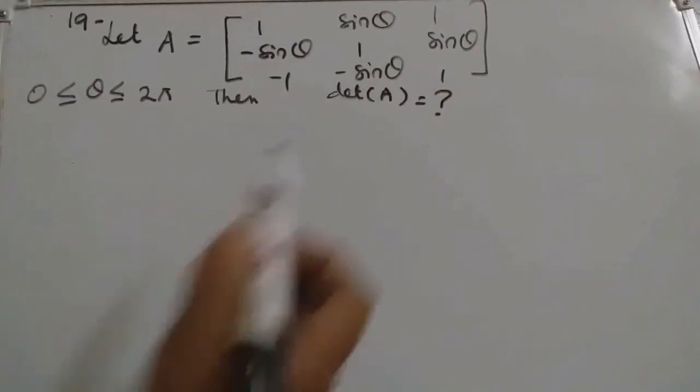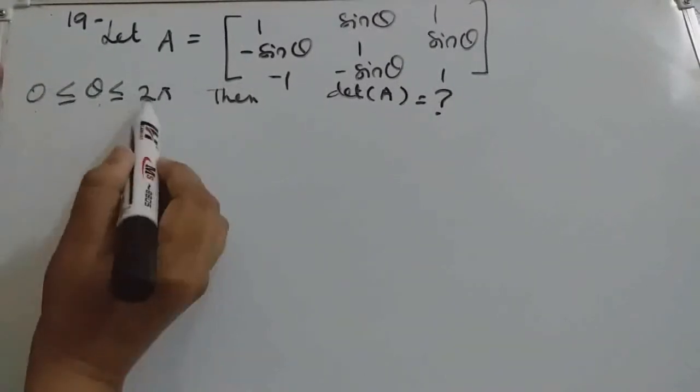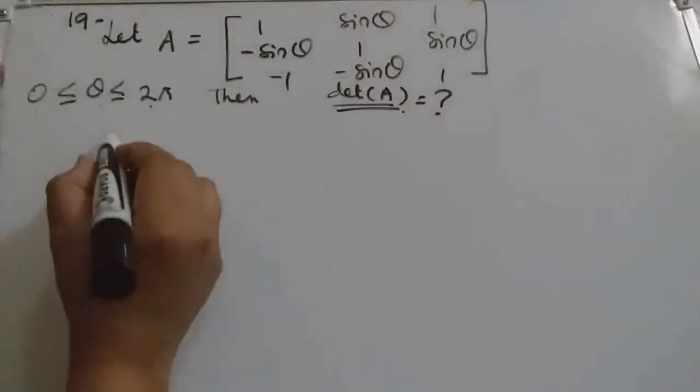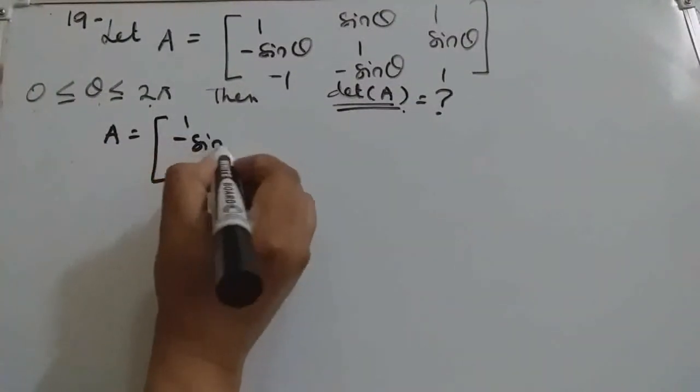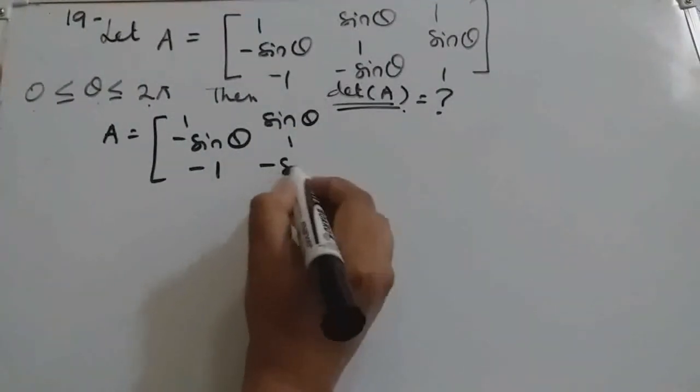Let A be the matrix and theta value is between 0 to 2π, then determinant A value we should find here. So A is given as this matrix, determinant we should find.